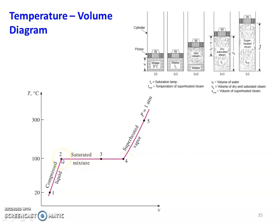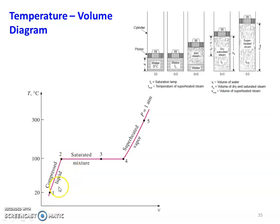Point 2 is the saturated liquid, point 3 is the wet steam, point 4 is the saturated vapor. From saturated vapor it becomes superheated vapor. This temperature-volume diagram line is for atmospheric pressure. The compressed liquid region leads to the saturation temperature — the saturated liquid or unsaturated liquid. From 2 to 4 is the evaporation process; the reverse, 4 to 2, is the condensation process.